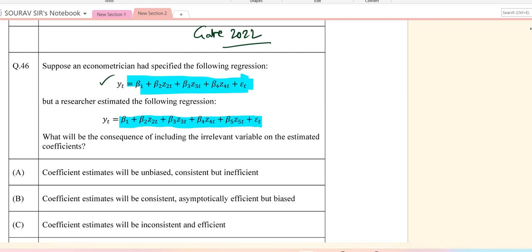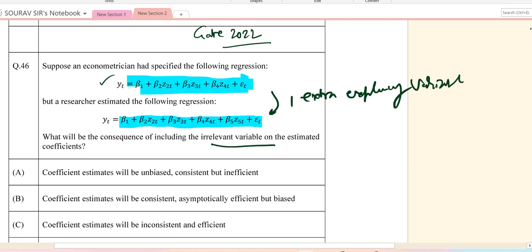So one extra variable. Now what will be the consequences of including the irrelevant variable in the estimated coefficients? The coefficient estimates will be unbiased and consistent but inefficient. So taking one extra variable doesn't change the biasedness or consistency. This is the answer.